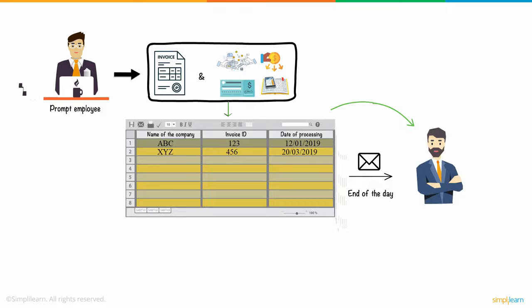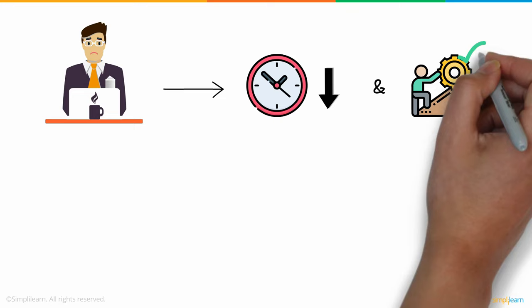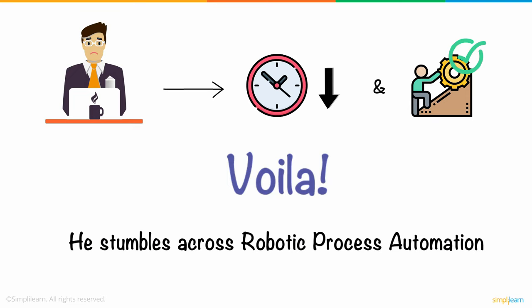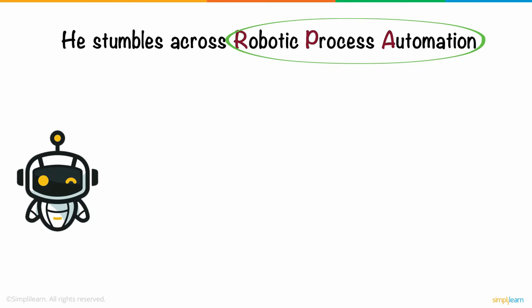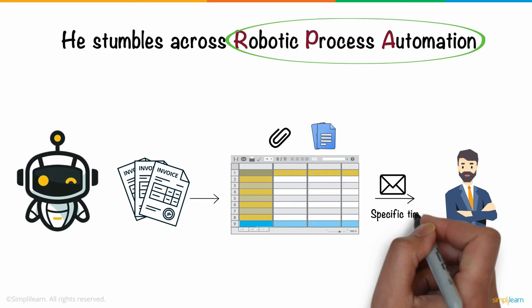But over a period, he starts finding this task to be time-consuming and repetitive. Frustrated, Jim looks for a way to reduce the time and effort it takes to complete the task. And voila! He stumbles across Robotic Process Automation, a.k.a. RPA. Using Robotic Process Automation, he builds a simple bot that extracts information from several invoices into an Excel sheet, attaches all the necessary financial reports, and sends them over to his superiors via email at a specific time every day.